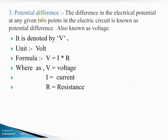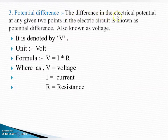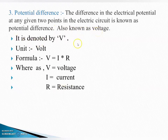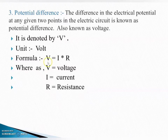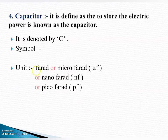Next definition: potential difference, यानि voltage. The difference in the electric potential at any given two points in the electric circuit is known as potential difference, also known as voltage. It is denoted by V, unit is volt, and the formula is V = I × R, where V is for voltage, I for current, and R for resistance.